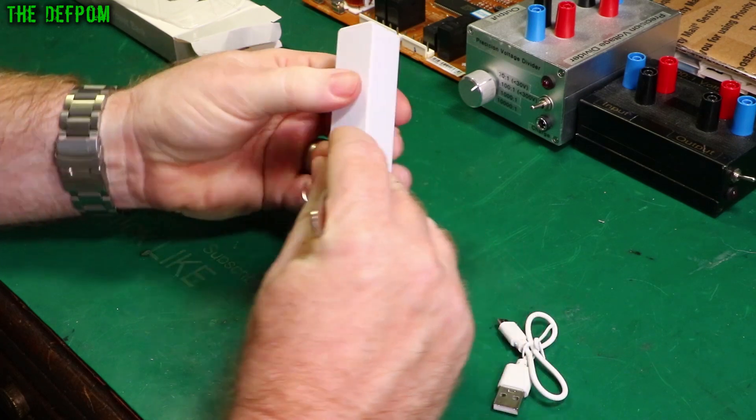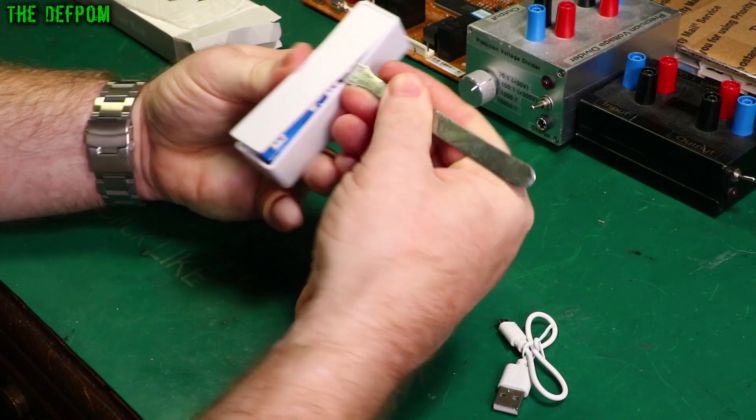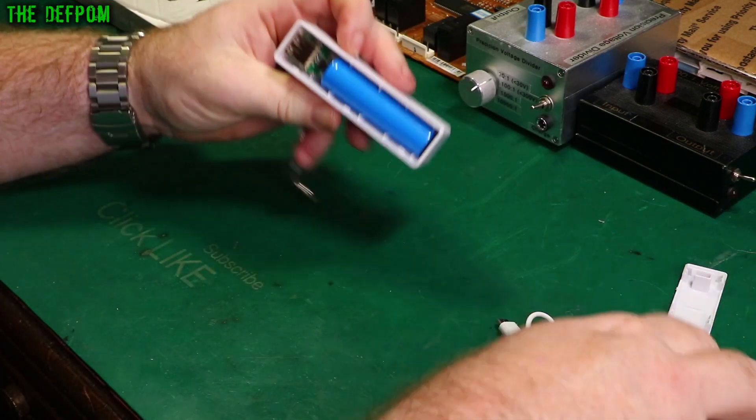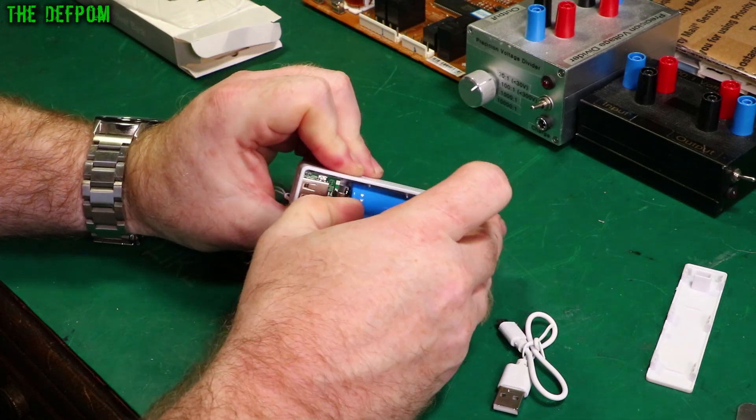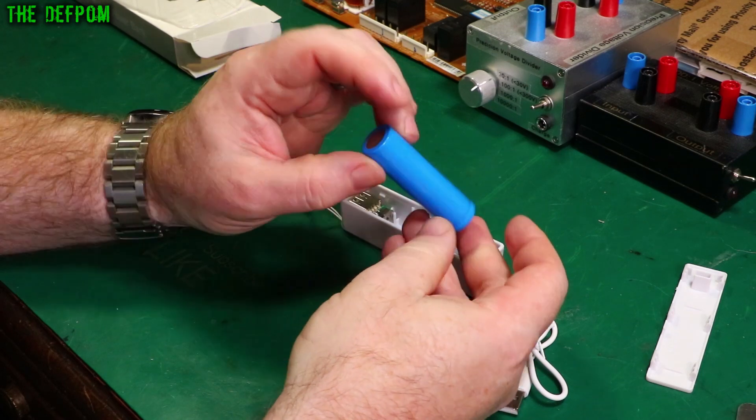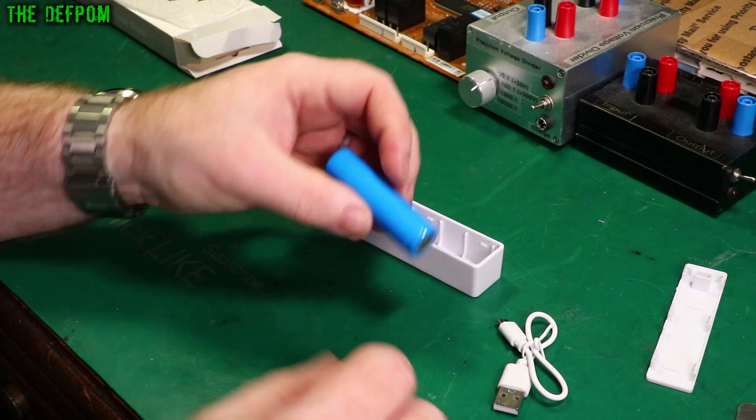I'll use a metal spudger, because what could possibly go wrong on something which has got a lithium cell on it. There we go. Oh excellent, it's a replaceable cell. Let's pop it out, absolutely no markings. And it doesn't weigh very much, weighs very little in fact.